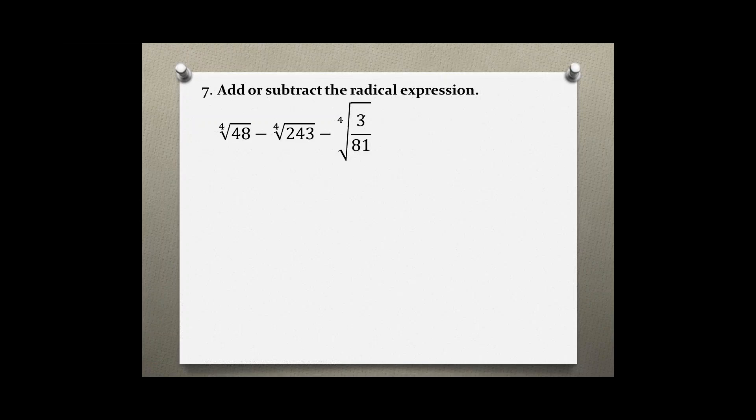Problem number seven: add or subtract the radical expression. We have the fourth root of 48 minus the fourth root of 243 minus the fourth root of 3 over 81. None of these are perfect fourth roots, which means we will have to split them into their perfect and non-perfect parts.